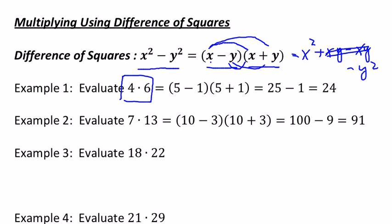So 4 minus 6, they're both equidistant from 5. 4 is 5 minus 1, and 6 is 5 plus 1. That means that 4 times 6 can be written like 5 minus 1, 5 plus 1, which means it can also be written as 5 squared minus 1 squared, which is 25 minus 1, which equals 24 like we knew.